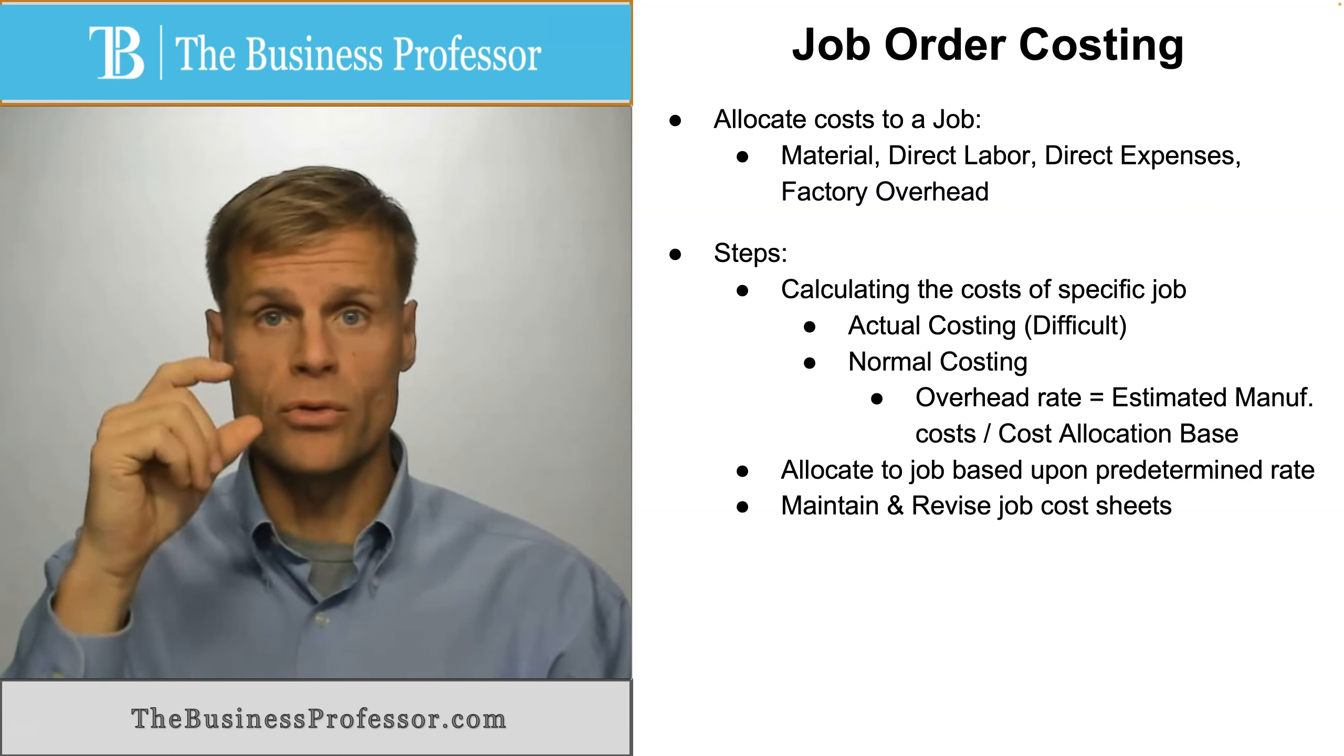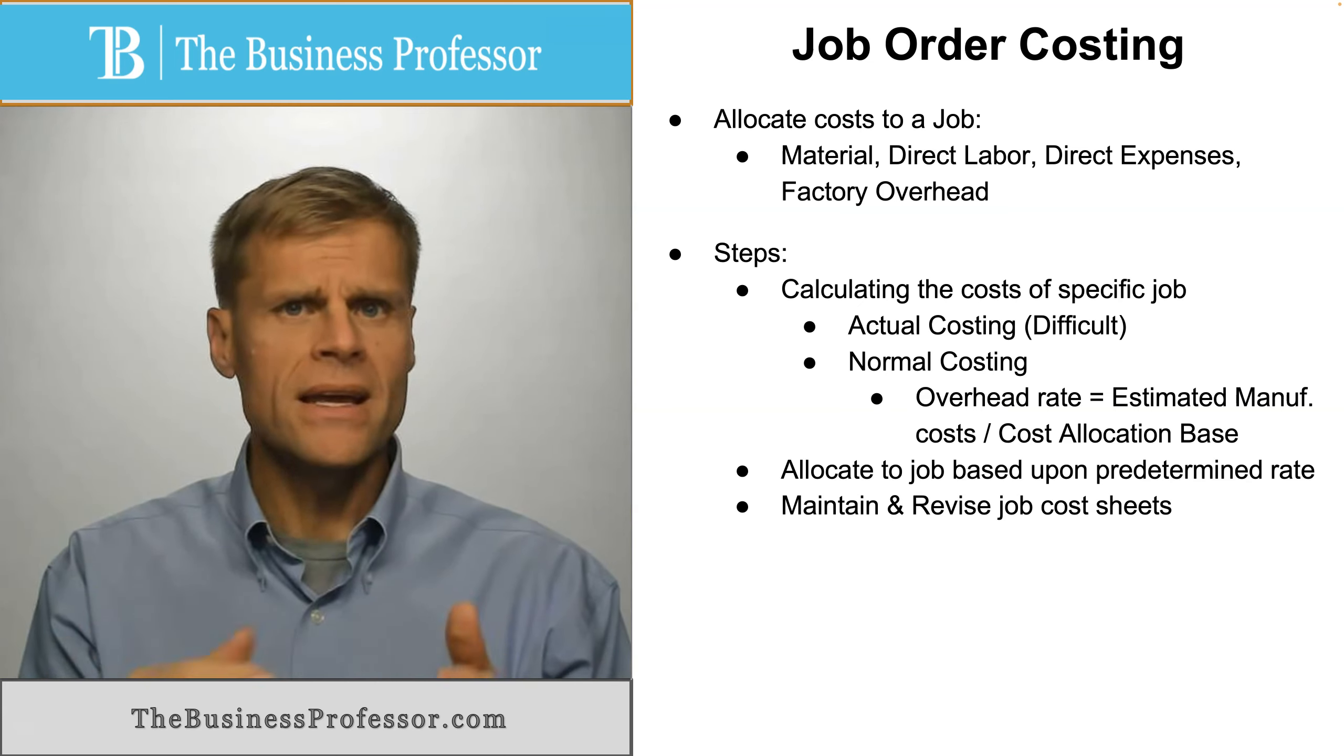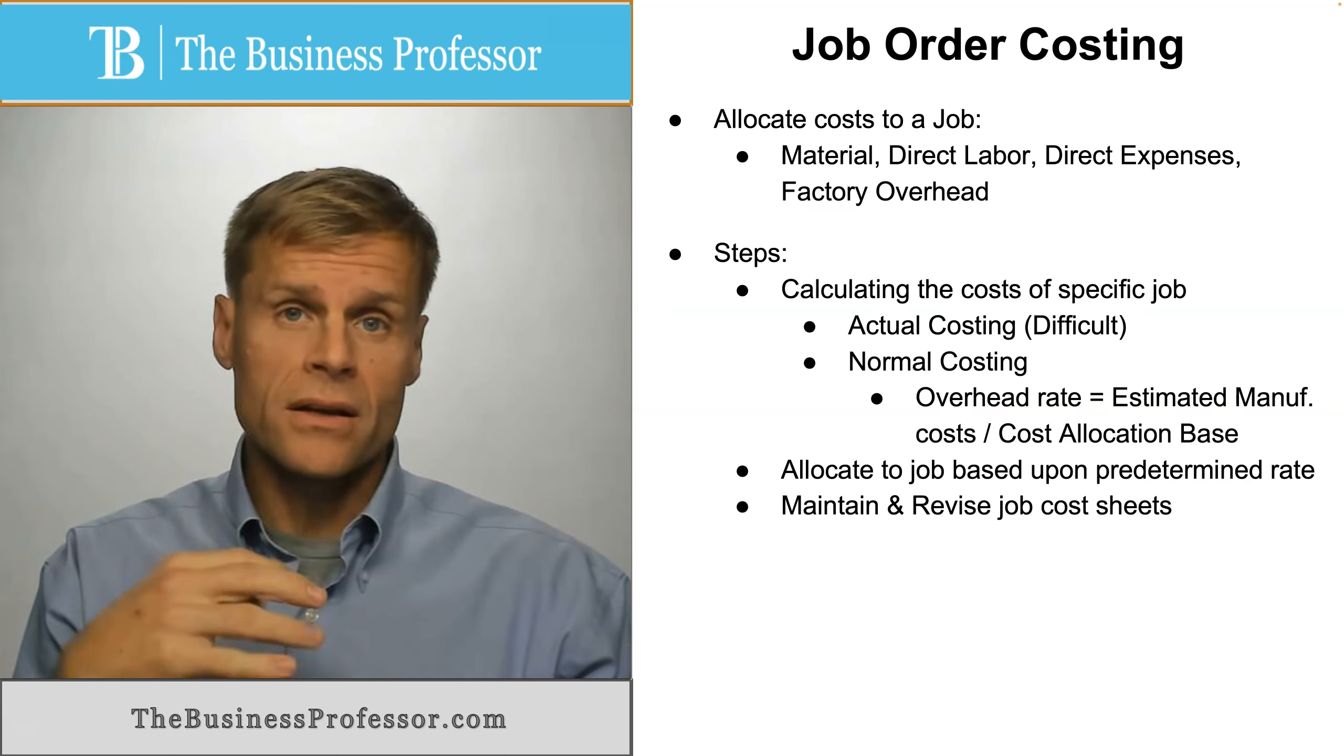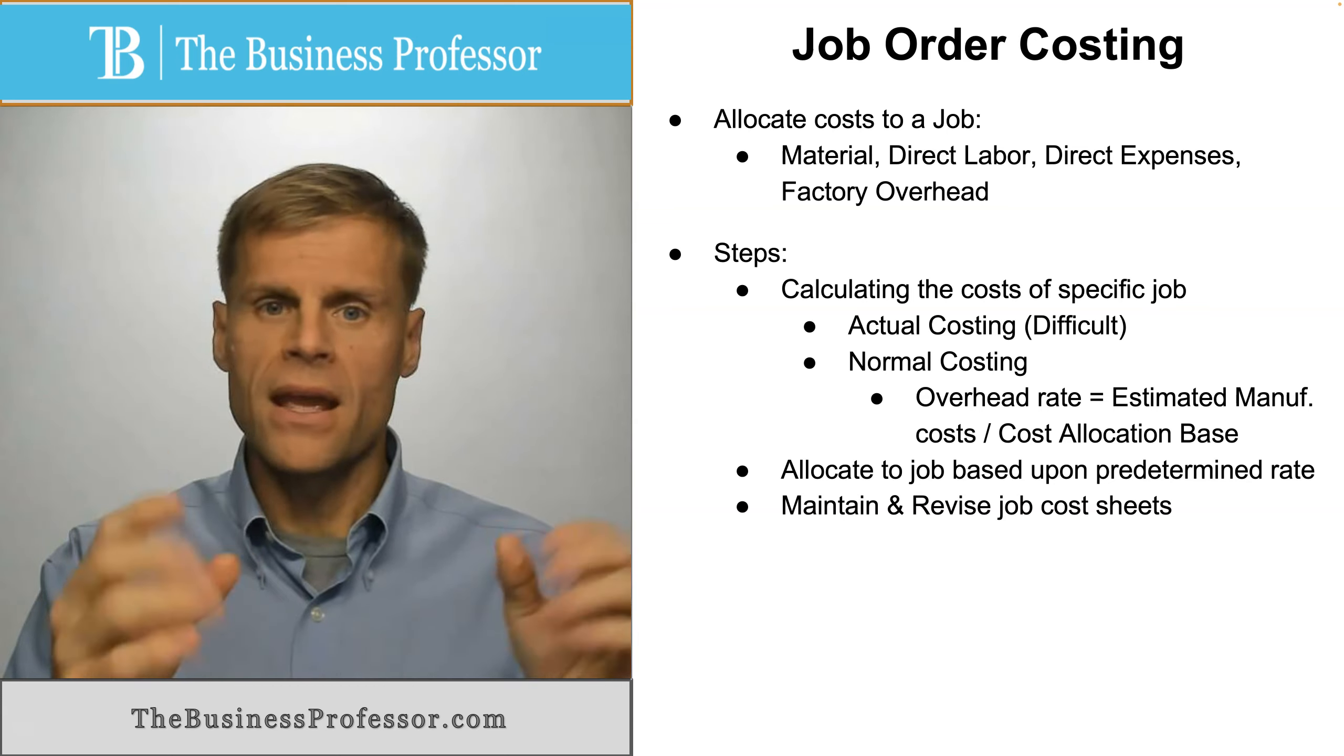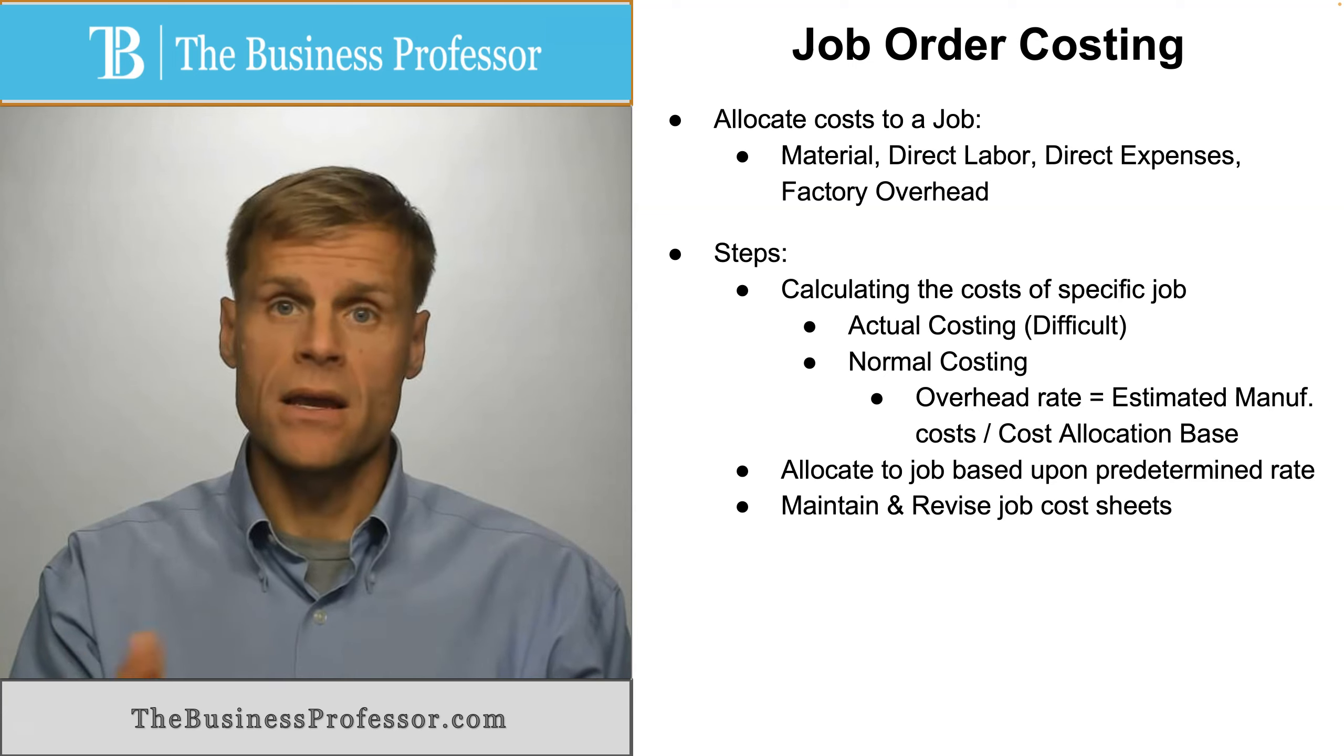That allocation base is going to bear some percentage or some portion of that total overhead. How do you calculate that? You come up with the overhead rate by combining all the estimated manufacturing expenses that are going to be included, and then you divide it by whatever you identify as your cost base.